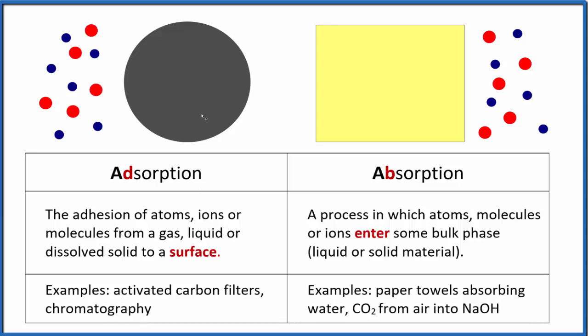It happens on the surface of materials. So you can imagine we have activated carbon charcoal here, and these atoms, molecules, or ions, it can be any of those, they're going to stick on the surface. They're going to become attached. They adhere. We could say there is adhesion where they're attached to the surface of the activated carbon.